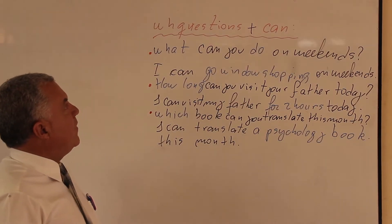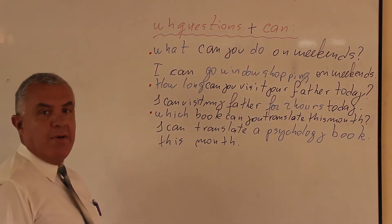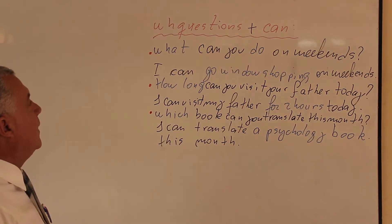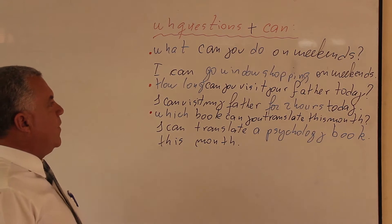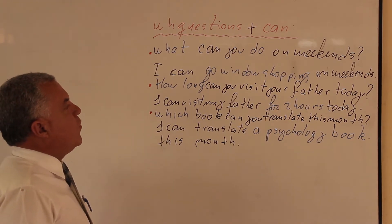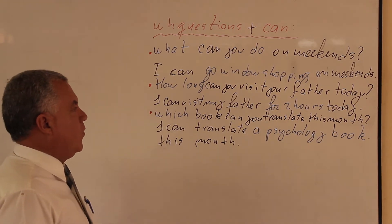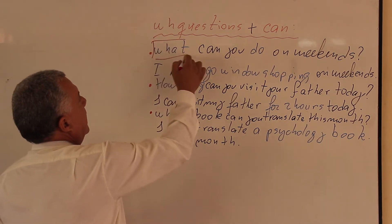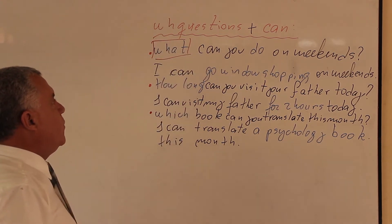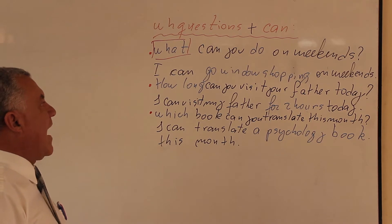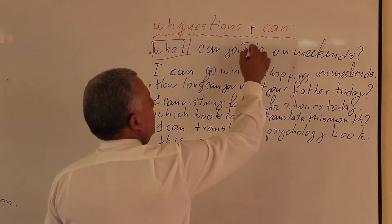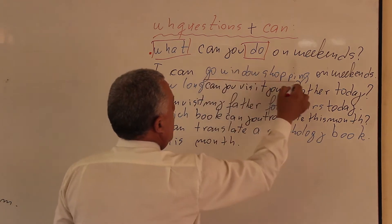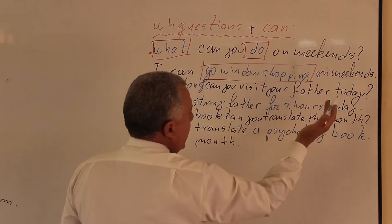The next part of the video is about rich questions plus CAN. I have prepared 3 questions. Number 1: What can you do on weekends? I can go window shopping on weekends. The question word is WHAT. WHAT is used to ask questions about what action. For that reason, the answer is 'go window shopping.'